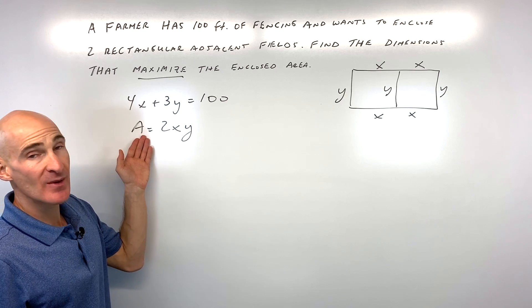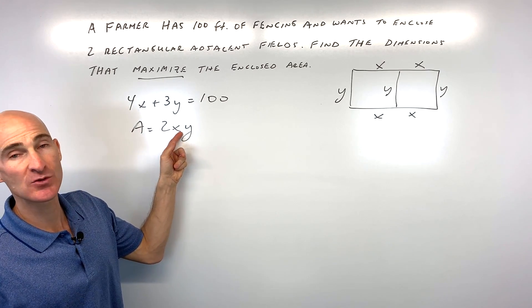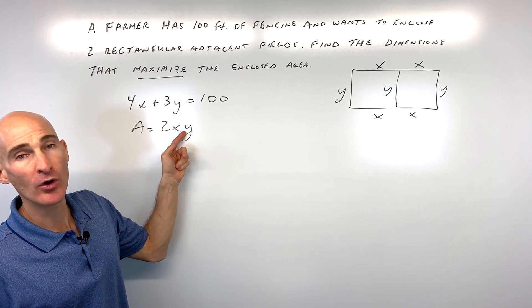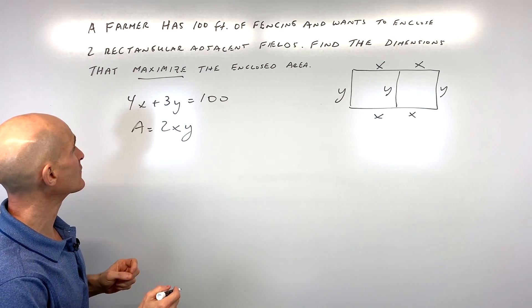Now we want to maximize the area, but you see how we have two variables here, X and Y. What we want to do, the key, is to get everything in terms of one variable. And then what we can do is analyze it from there.